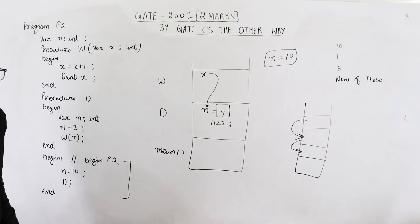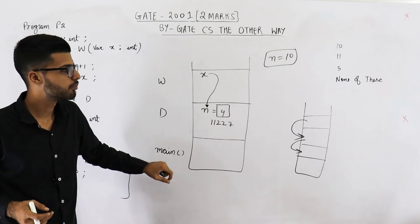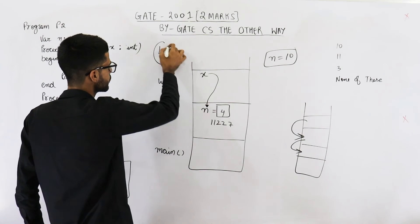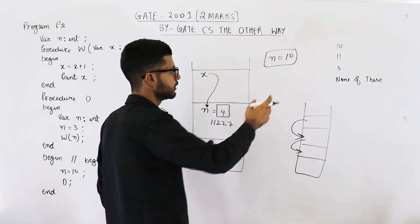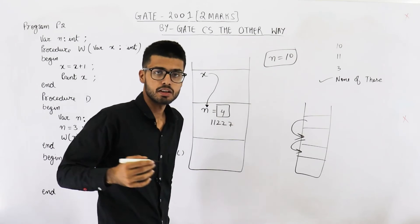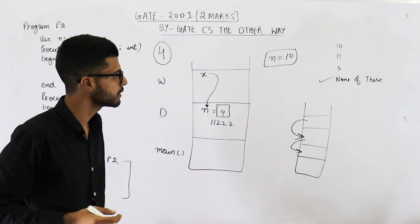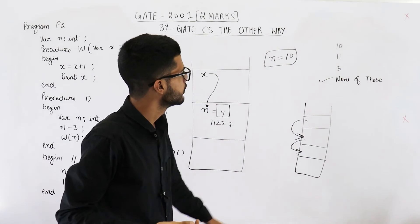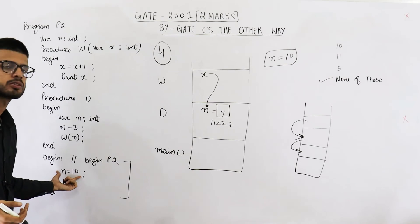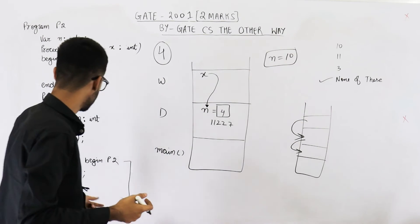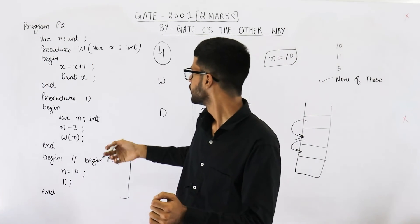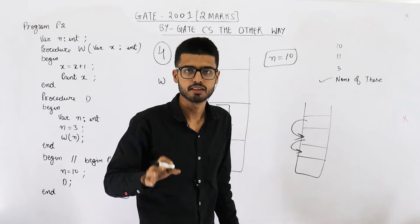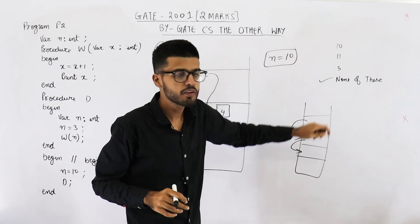The next line says 'print x'. Since x is a reference variable, the memory location it points to — which now contains 4 — will be printed. So the output is 4. Looking at the options, 4 is not listed, so the answer is 'none of these'. The other options might confuse you: you might think 3 because we assigned 3, or 10 because we assigned 10, or 11 because 10 was assigned and incremented. But the correct answer is 4, and hence 'none of these' is correct.